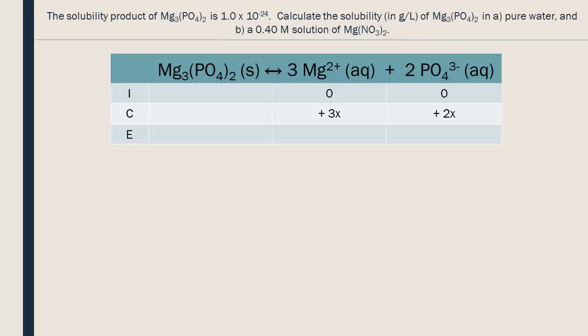A certain quantity of moles, x, will dissolve while the reaction moves towards equilibrium. Looking at the molecular formula, for x moles of Mg₃(PO₄)₂ that dissolve, we obtain 3x moles of magnesium and 2x moles of phosphate. The coefficients give the ratio of the dissociated ions.